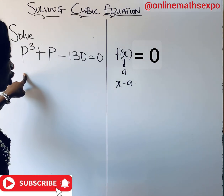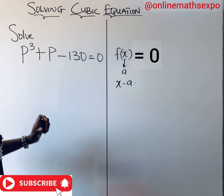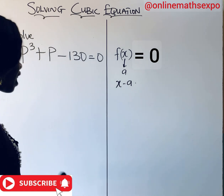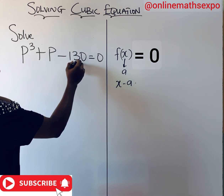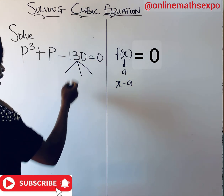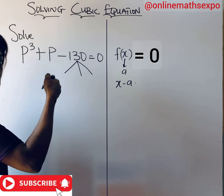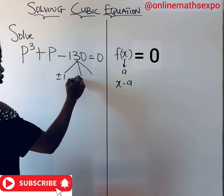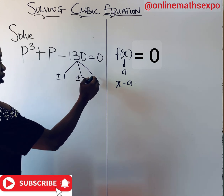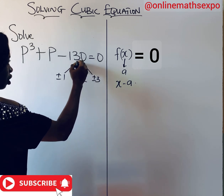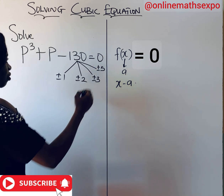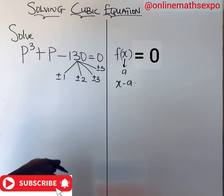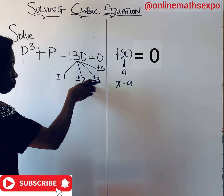Now in this problem we don't know any value yet, so what we need to do is get the factors of the constant term, 130. Let's list the factors of 130 — the numbers that can divide 130, both positive and negative. One is a universal factor; you can also have plus or minus two, plus or minus three, plus or minus five, and so many more.